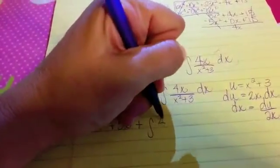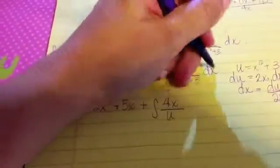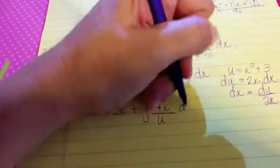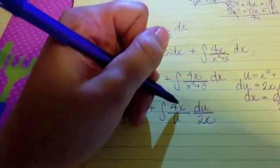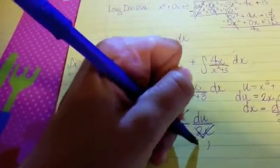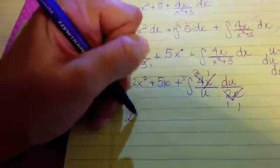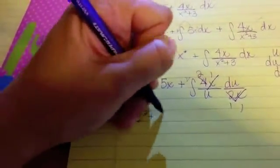And then the dx is going to become du over 2x. And then we can get the cancellation, so that x cancels that x, and then that 4 reduces with that 2, leaving me with just a 2 in the numerator. So we then have 2x cubed plus 5x